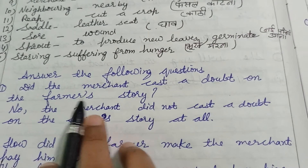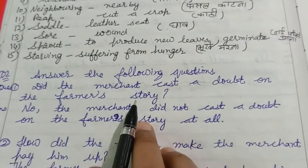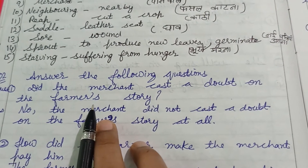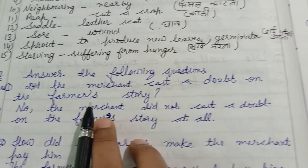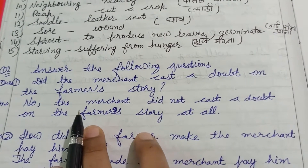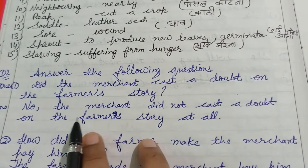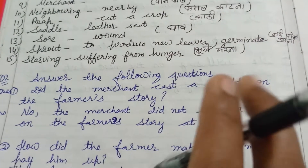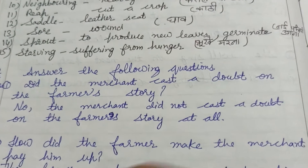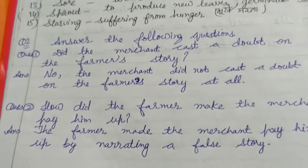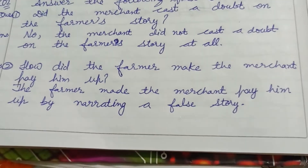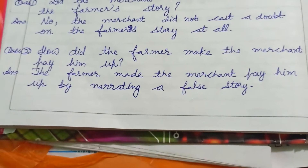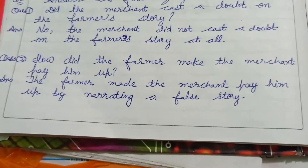Question 1: Did the merchant cast a doubt on the farmer's story? The merchant did not cast a doubt on the farmer's story at all. Kya merchant ko farmer ki story pe koi bhi shak nahi hua - correct answer is no.